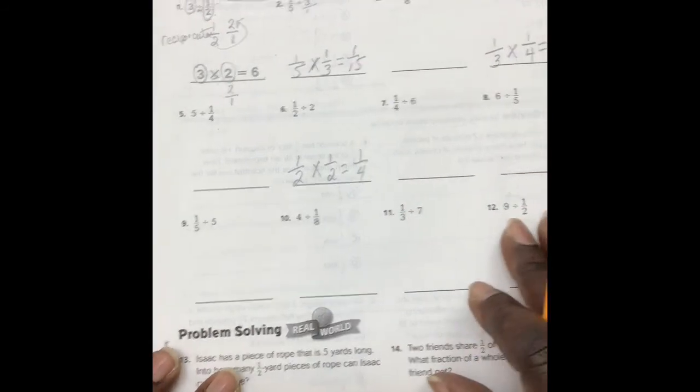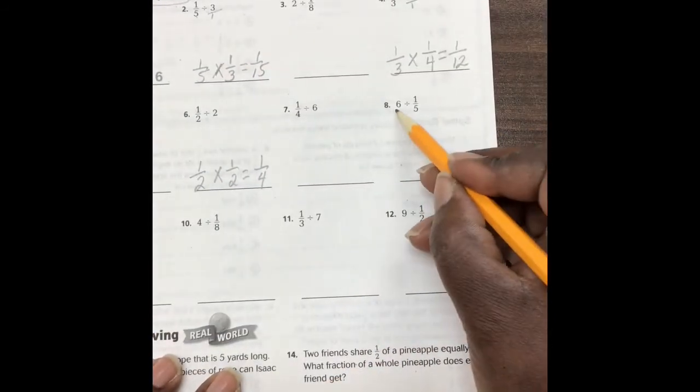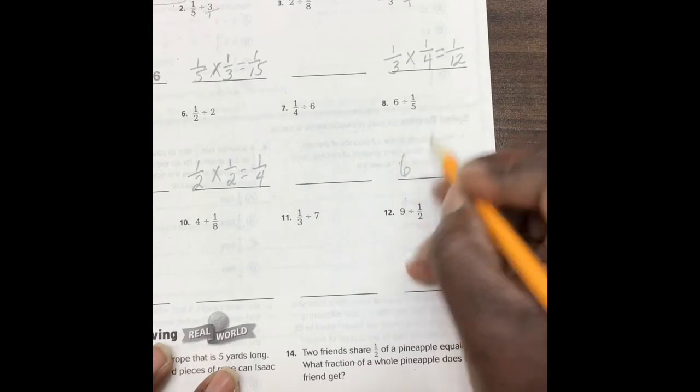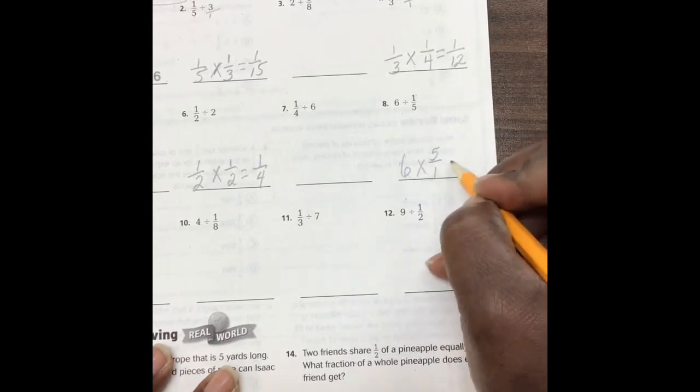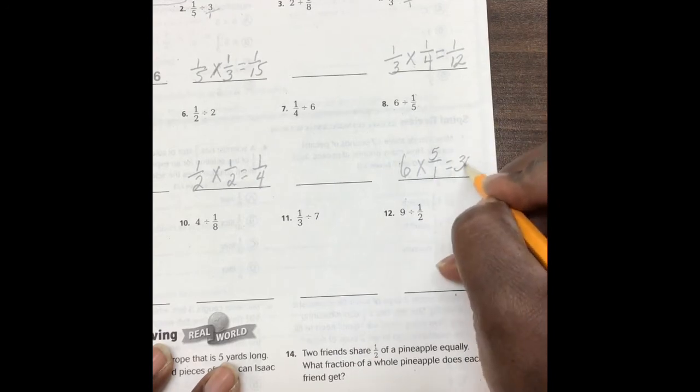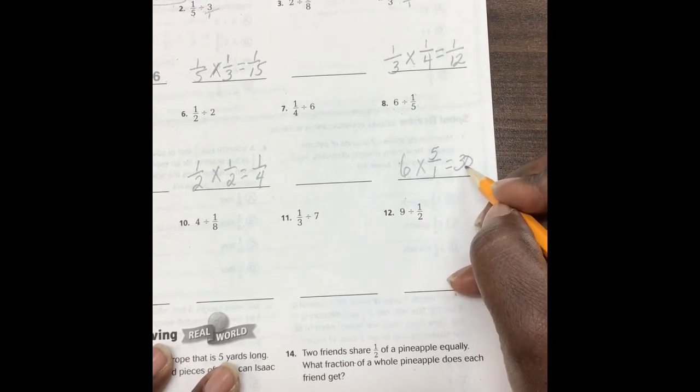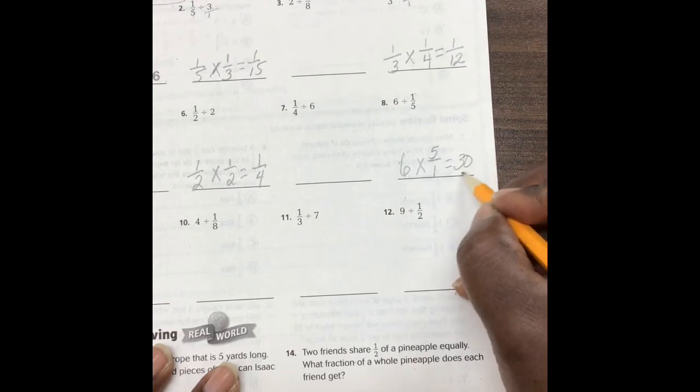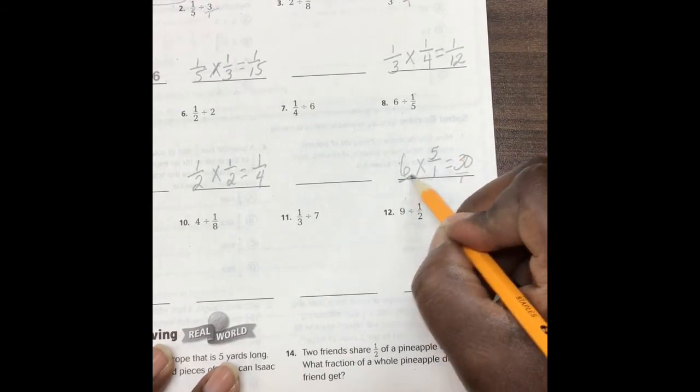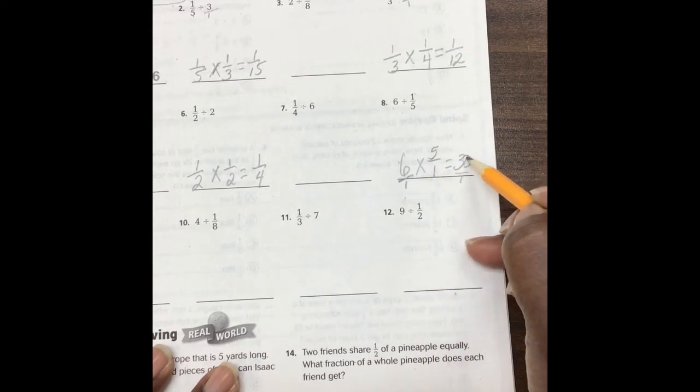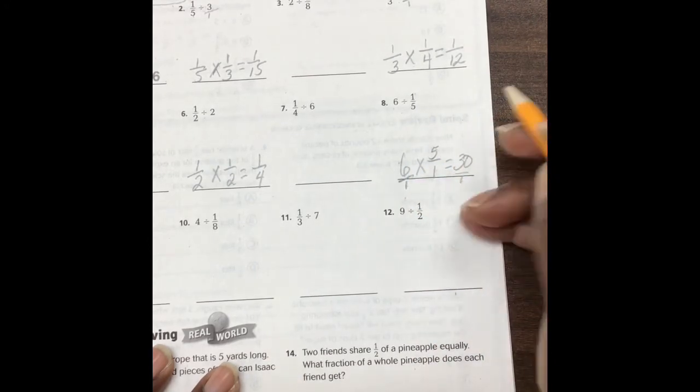Let's look at number 8. 6 whole times, instead of 1 fifth, it is 5 over 1, which would give us 30. It would be 30 over 1, because this is technically 6 over 1, so 6 times 5 is 30, 1 times 1 is 1, which gives us 30 whole.